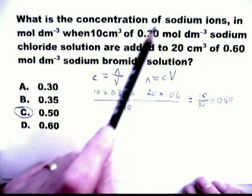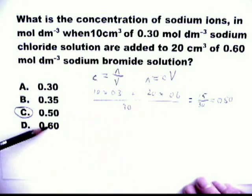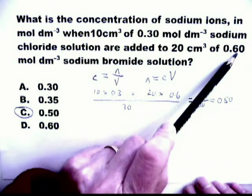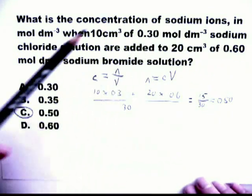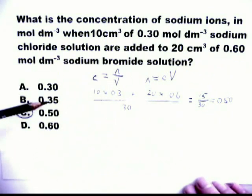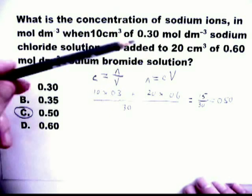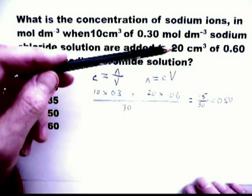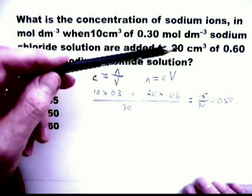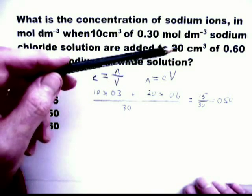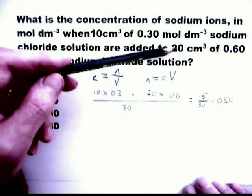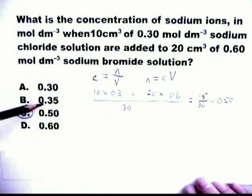Similarly, D is not a possible answer. You started with a solution of 0.6, and you added a more dilute solution to it. So that's not possible. B is an interesting one. You started with a concentration of 0.3, and you added quite a lot, twice as much, of a much stronger solution. In fact, it was twice as strong. Unlikely to be B. So that also gives you C as the answer.